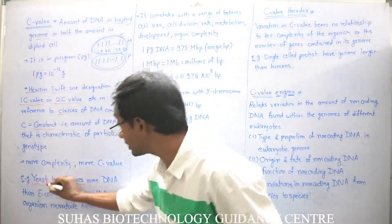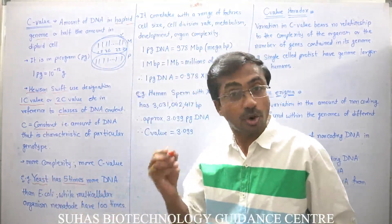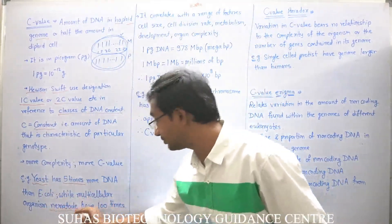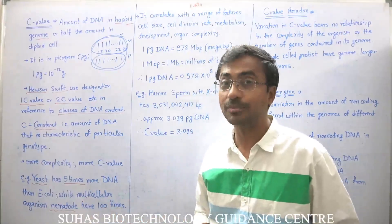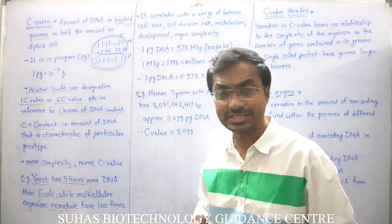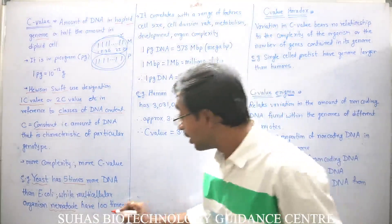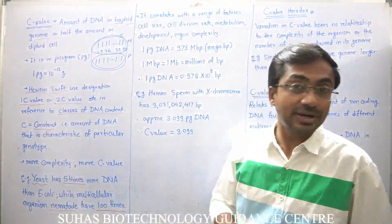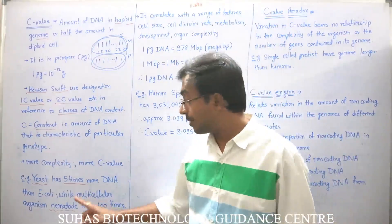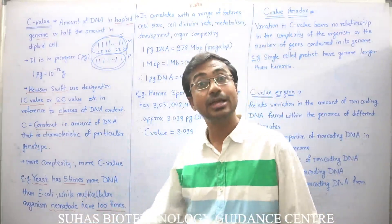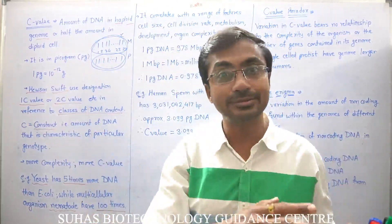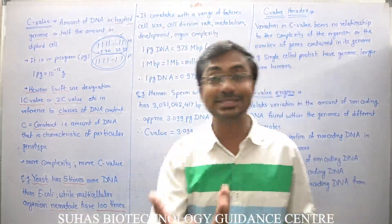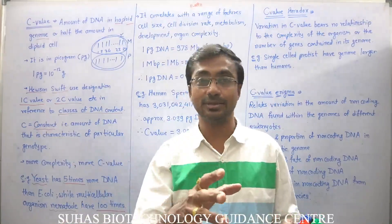Not only that — multicellular organisms like nematode are more complex. Nematode is a multicellular organism, though quite small in size. It has 100 times more DNA than E. coli. So nematode, being multicellular, has DNA content 100 times that of E. coli, while yeast, being a complex unicellular eukaryote, has 5 times more than E. coli.